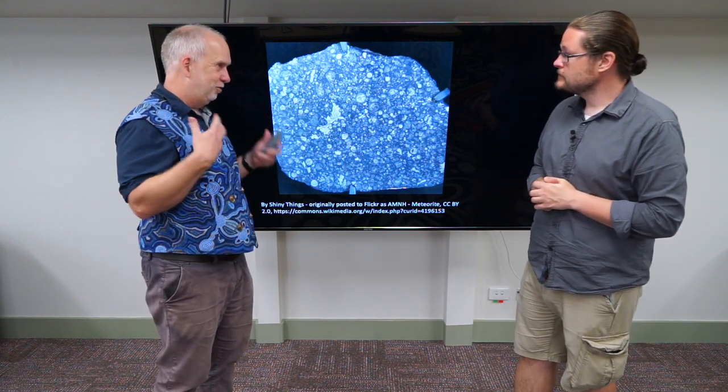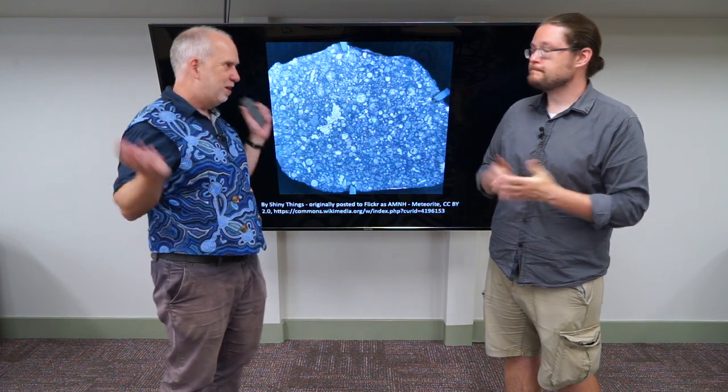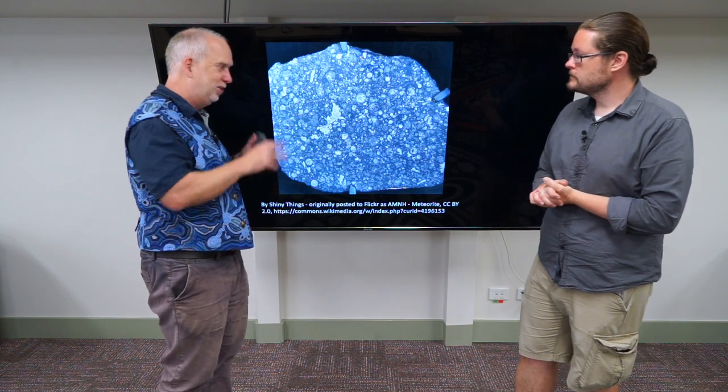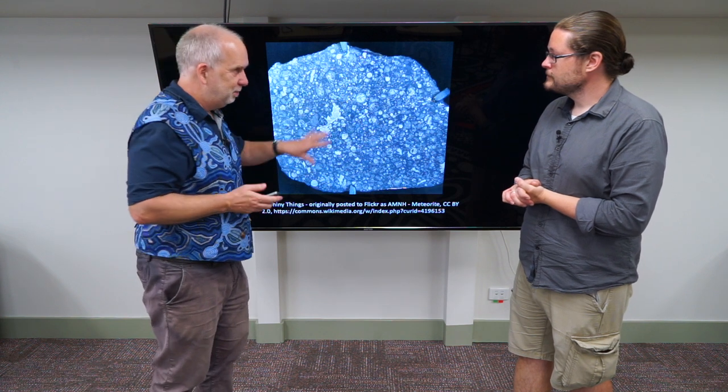They're probably lumps of rock that got melted. We don't quite understand how. But, at some point in the early solar system, maybe a blast wave went through or something and it melted a whole bunch of these things. They became blobs of molten rock and then they got included into these meteorites.